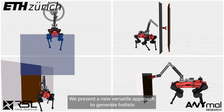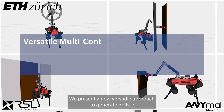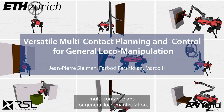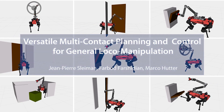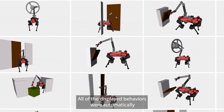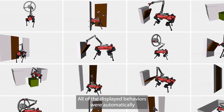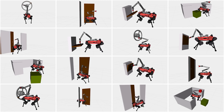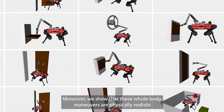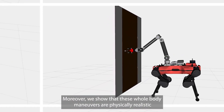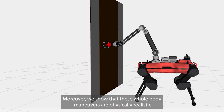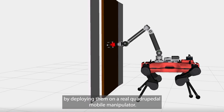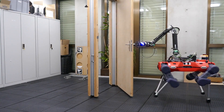We present a new versatile approach to generate holistic multi-contact plans for general loco-manipulation. All of the displayed behaviors were automatically discovered with minimal manual guidance. Moreover, we show that these whole-body maneuvers are physically realistic by deploying them on a real quadrupedal mobile manipulator.